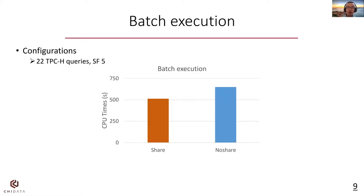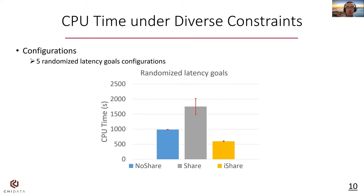Our experiments are performed on the TPCH benchmark. We show that if we execute all queries in a single batch, shared execution has lower execution time. However, if we introduce randomized latency goals, we see that shared execution does not prevail. iShare, on the other hand, has much lower CPU consumption or total execution time compared to both the shared and no-share baselines.